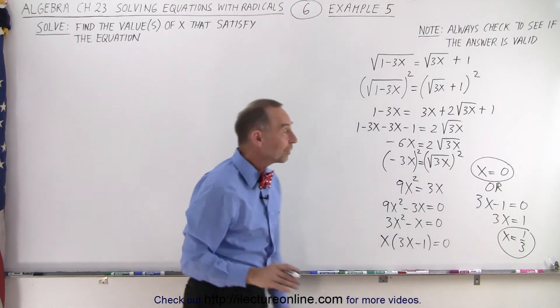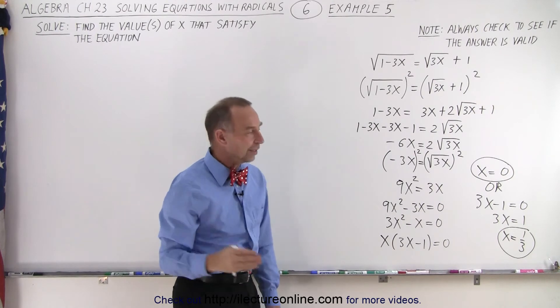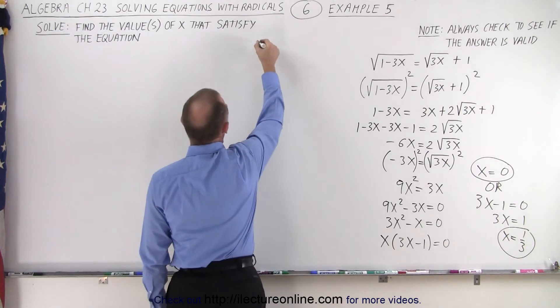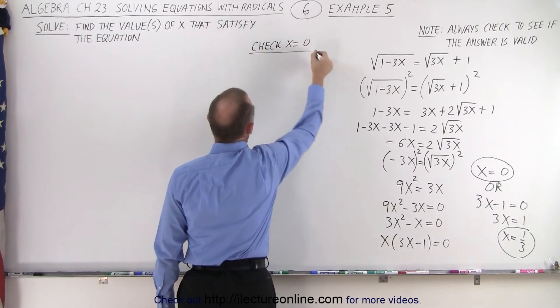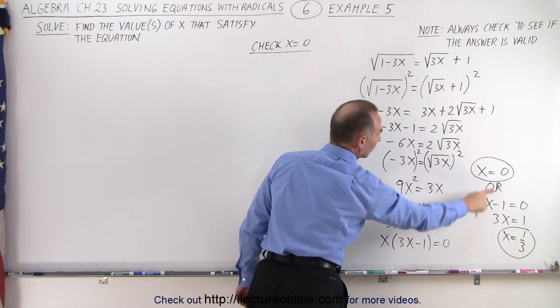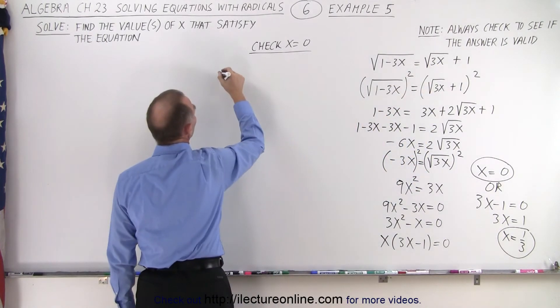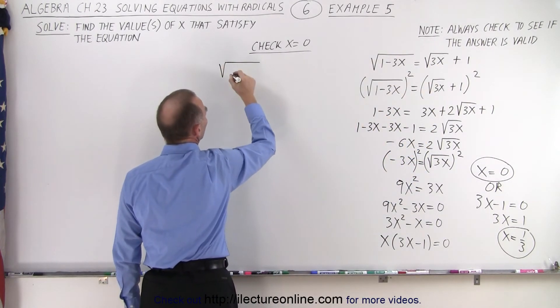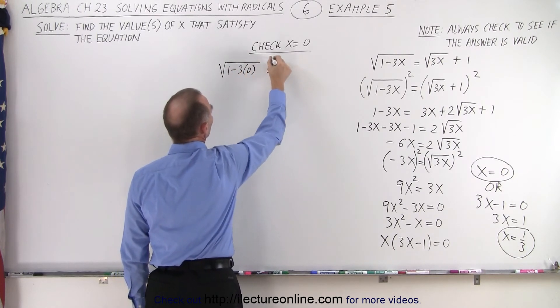Now we can't claim victory yet because first we have to check them to make sure they're indeed valid. So let's do that. So let's first check x equals 0. What that means is we're going to plug 0 into each x in our original equation and see if that satisfies that equation.